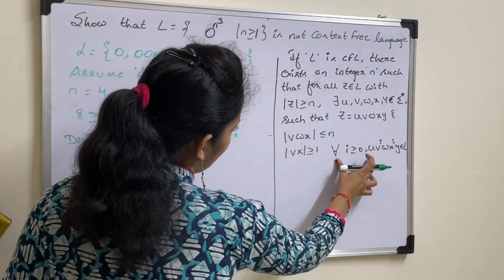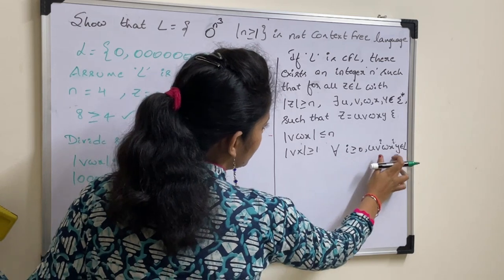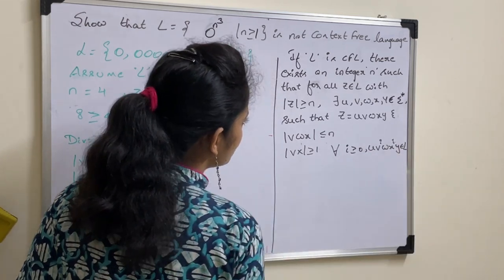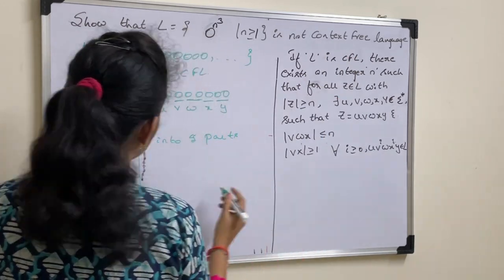Now, you need to check that for all i greater than or equal to 0, your string should belongs to capital L. Then only that language will be context free language. So, check this condition.